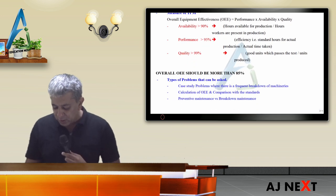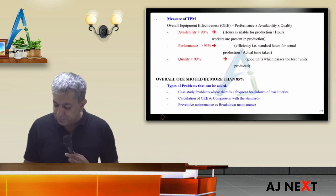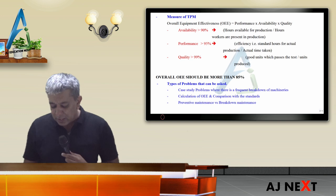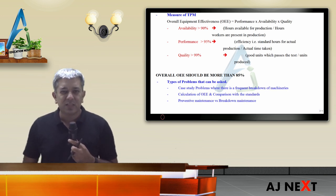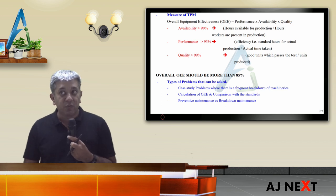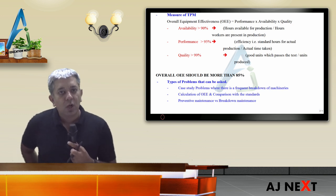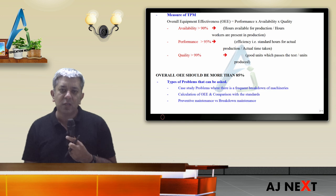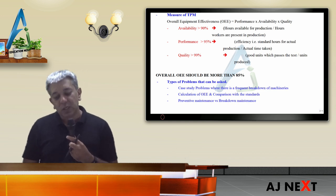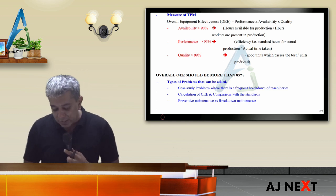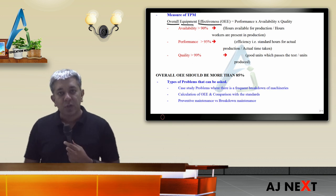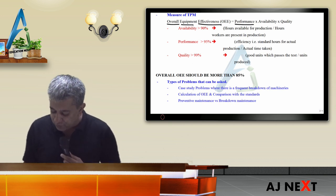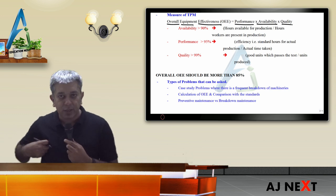Mr. Nakajima formed a concept called OEE — Overall Equipment Effectiveness. It is calculated as: Performance × Availability × Quality.